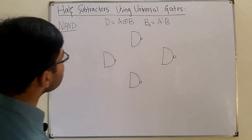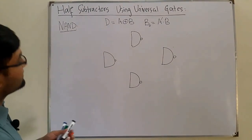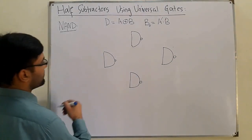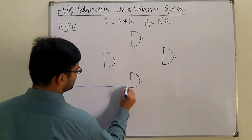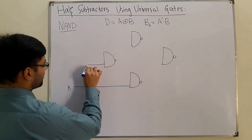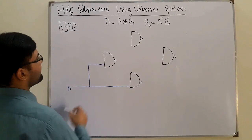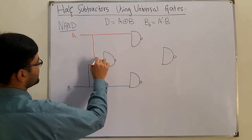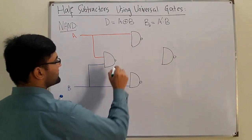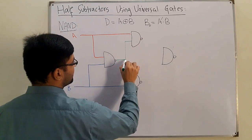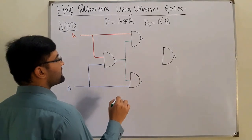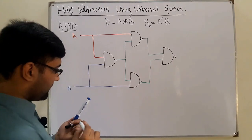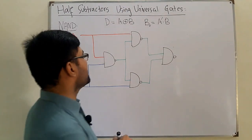This would be similar to the adder circuit. We have A and B going to this gate, and A and B also going to another gate. We have A to this gate and A to this gate as well. Now the output is taken from here and given to these two gates, and the outputs of those two are again NANDed together, giving us a final output over here.